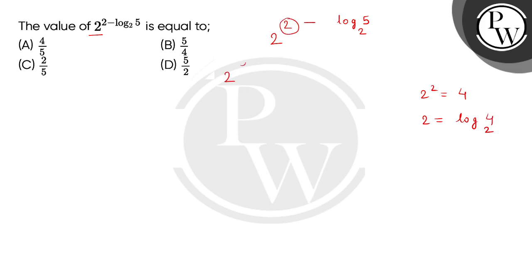This is 2 to the power (log₂4 minus log₂5). So we can check this whole power form. Now children, we can express it as 2 to the power log₂(4/5).